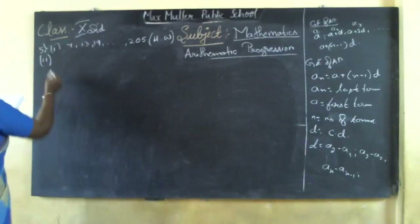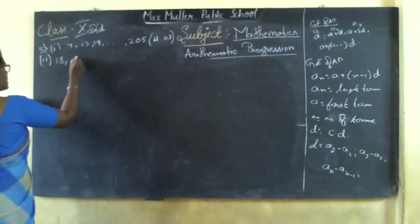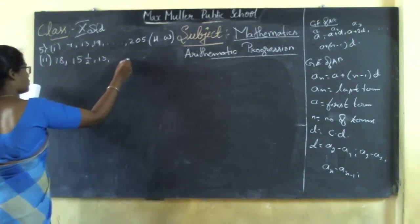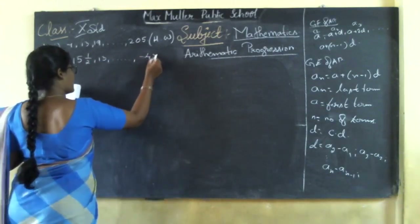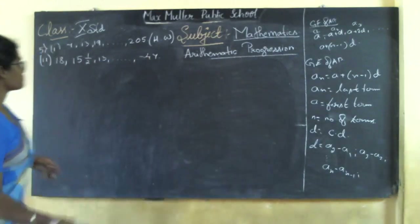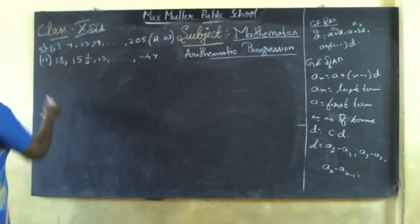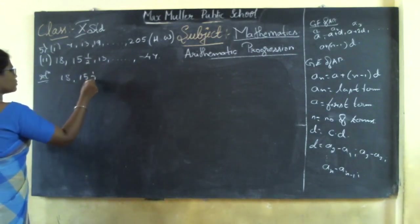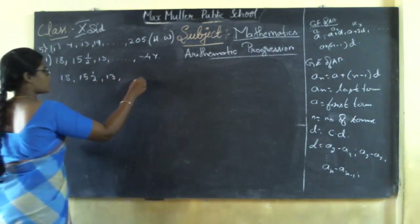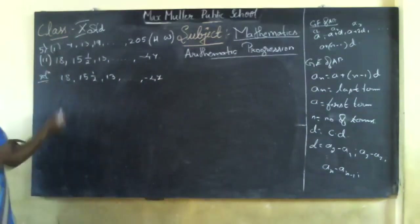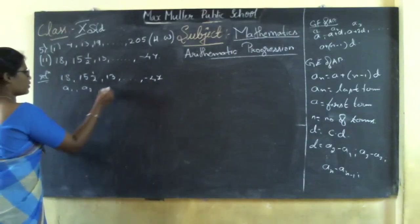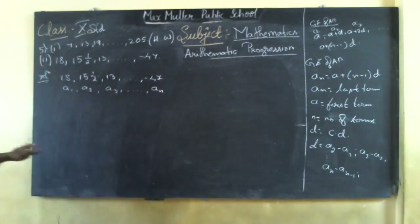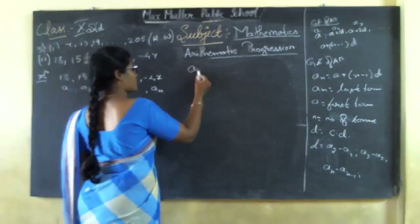Now let me teach you about the second sum. That is 18, 15½, 13 — it goes on up to minus 47. This is the sequence given. Let us solve it. The terms are a1, a2, a3 and the last term is taken as an. You do not know the n value. Since an is given, we are going to apply the formula: an = a + (n−1)d.